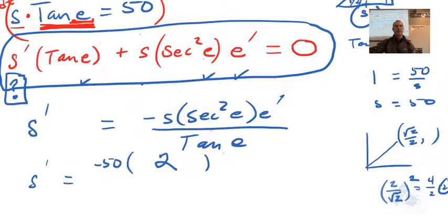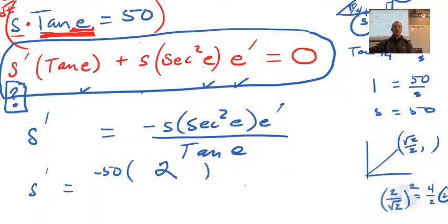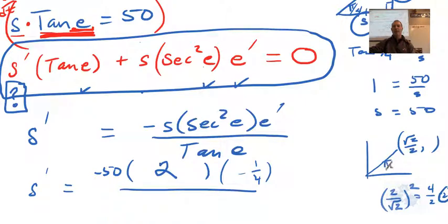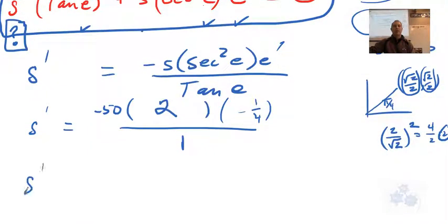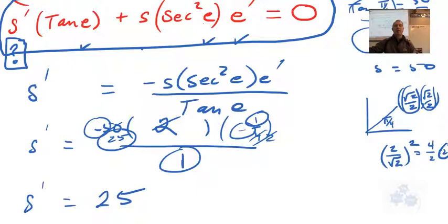Now e prime is negative one quarter. And tan of e — tan of pi over four — is 1. So s prime equals negative 50 times 2 times negative one quarter, all over 1. That gives us 25 — the negatives cancel — so s prime is positive 25. Positive makes sense because the shadow is lengthening.